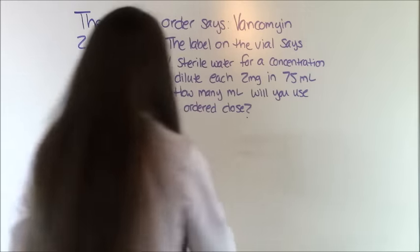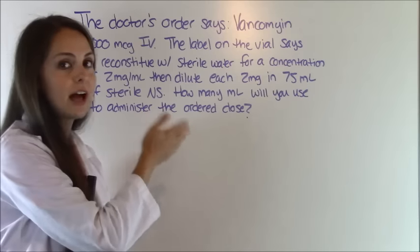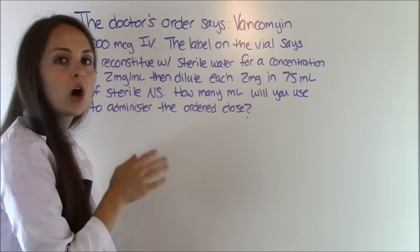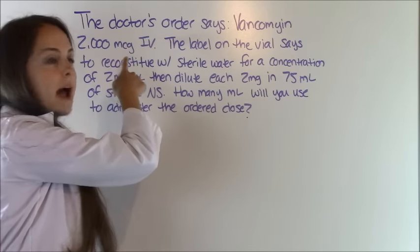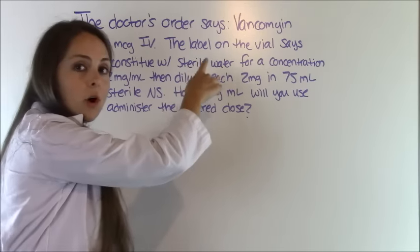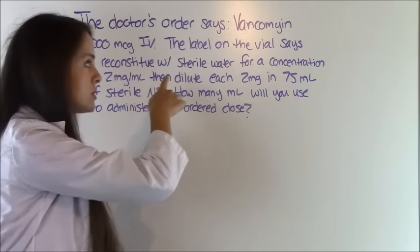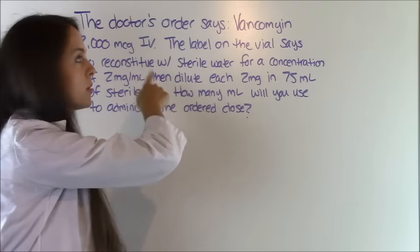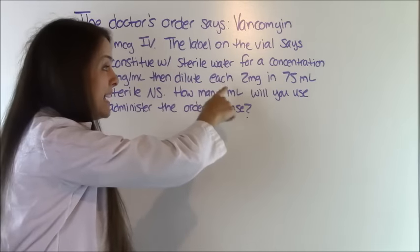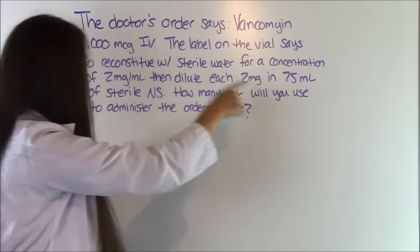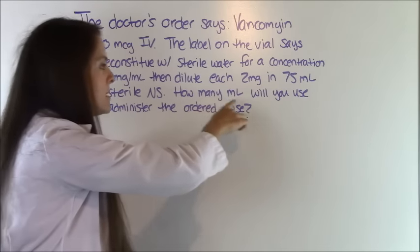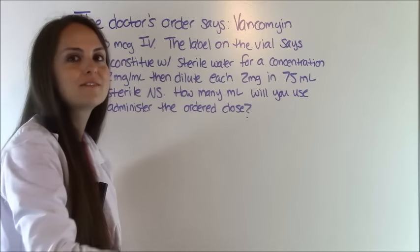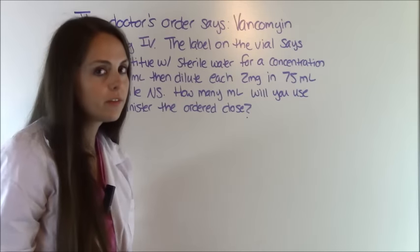My first problem is this — typically this is what it's going to look like on an exam. The doctor order says vancomycin 2,000 micrograms IV. The label on the vial says to reconstitute with sterile water for a concentration of 2 milligrams per milliliter, then dilute each 2 milligrams in 75 milliliters of sterile normal saline. How many milliliters will you use to administer this ordered dose? There's a lot of stuff here, so let's underline the most important things.